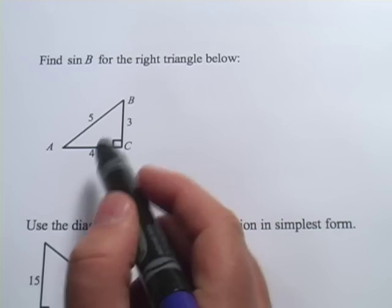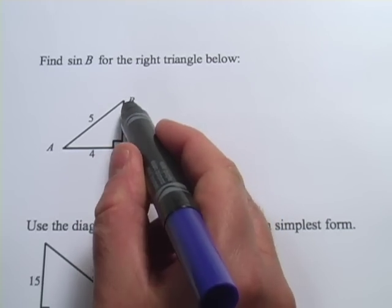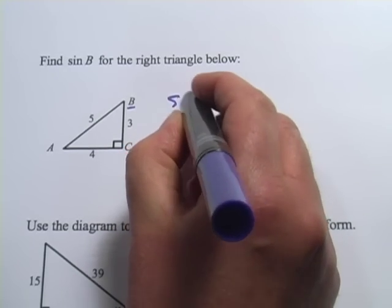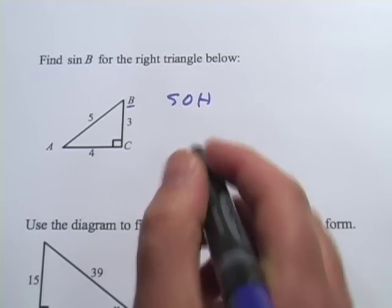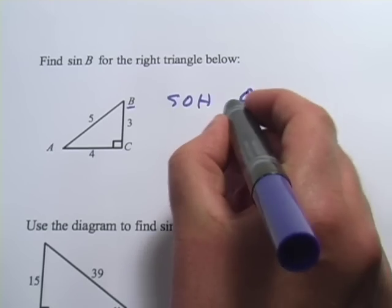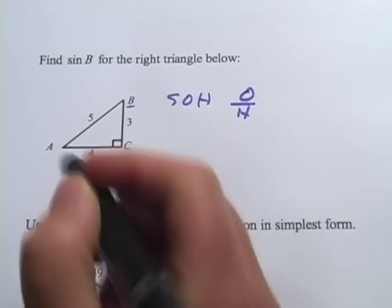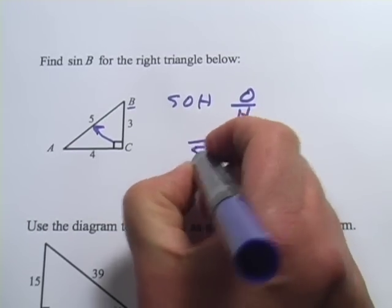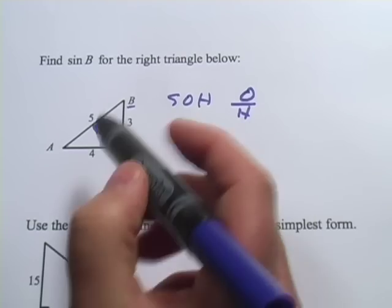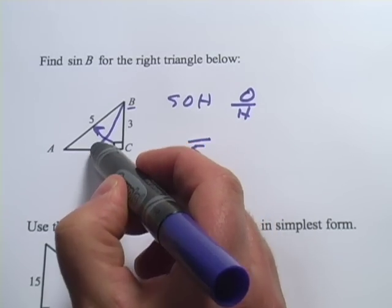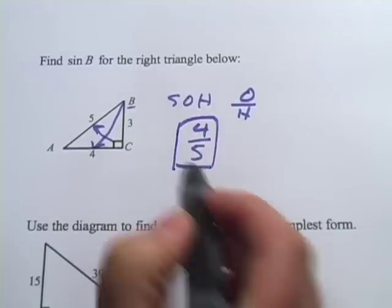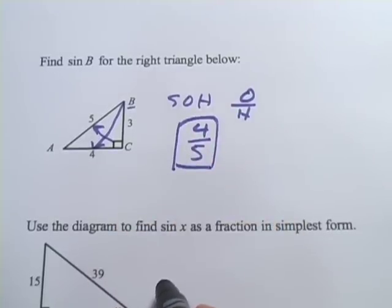This one says find sine B for the right triangle below. And that is almost the same problem we did, except we're looking at B. So remember, the sine is SO in that SOHCAHTOA. So it's opposite over hypotenuse. Well, the hypotenuse is 5. So that goes on the bottom of my fraction. And then I want the opposite of B. Well, the opposite of B is 4. So the sine of B in this triangle is 4/5.